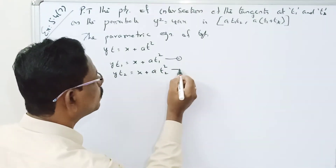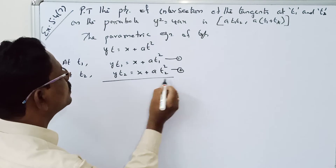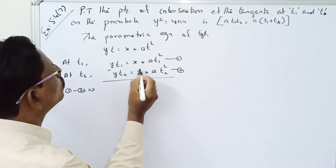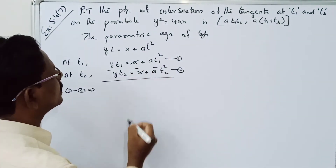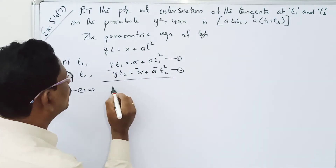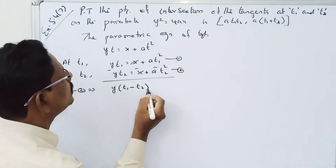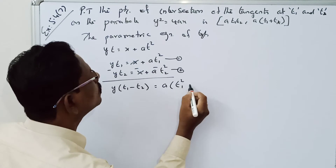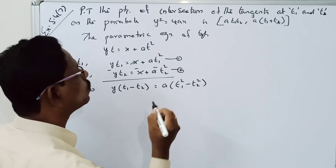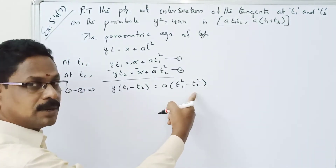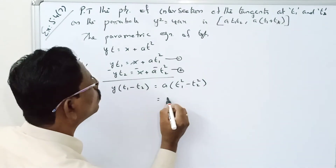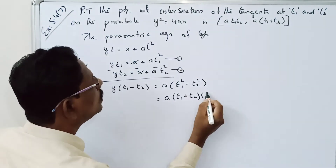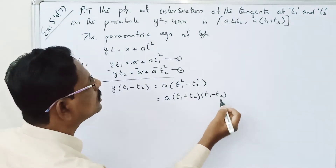Subtracting the second equation from the first, the x terms cancel. Taking y as common: y(t₁ − t₂) = a(t₁² − t₂²). Using the identity a² − b² = (a+b)(a−b), this becomes y(t₁ − t₂) = a(t₁ + t₂)(t₁ − t₂).